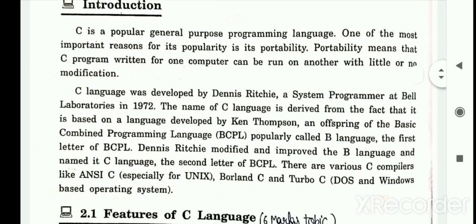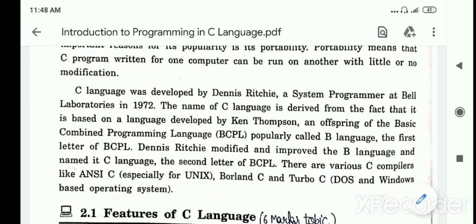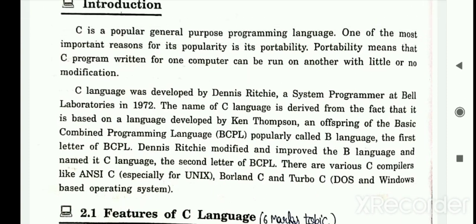C was developed by Dennis Ritchie, a system programmer at Bell Laboratories in 1972. The name C is based on the language by Ken Thompson — an offspring of the Basic Combined Programming Language, BCPL, which was properly called B Language.